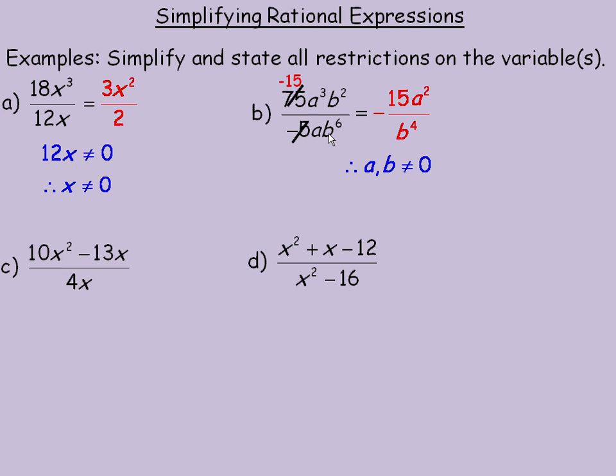Also, b to the 6, well, 0 to the power of 6 would also, 0 for b make this denominator have a value of 0 and hence be undefined as well. So the restrictions are that a and b both are not allowed to equal 0.